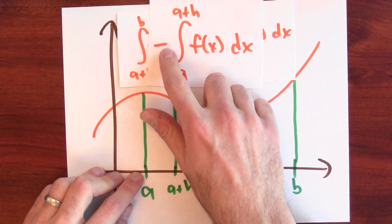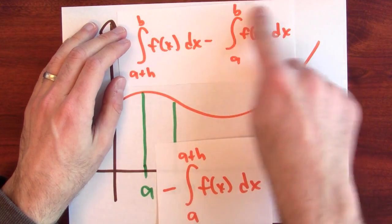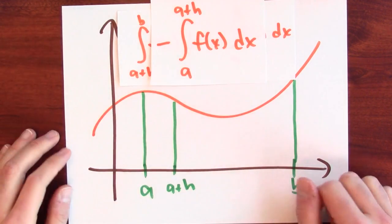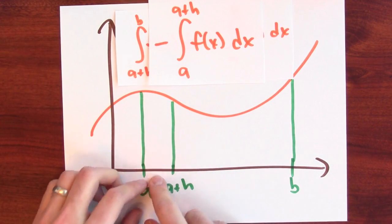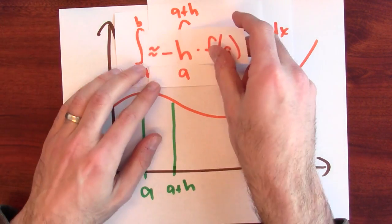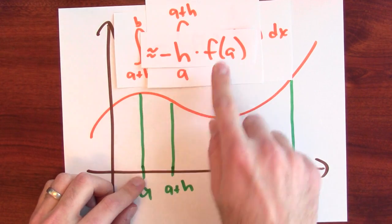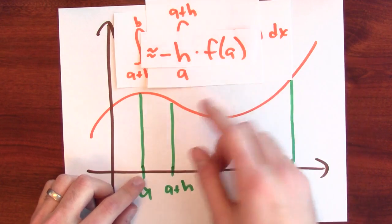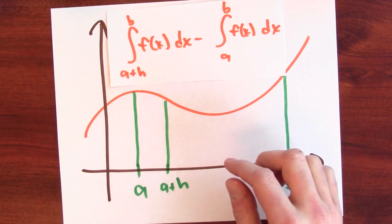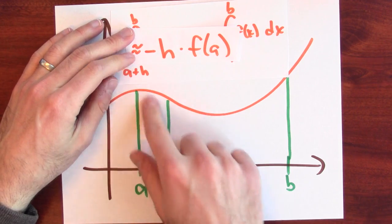But it comes with a negative sign, because I'm subtracting this smaller area and I'm subtracting this larger area. So I've got this negative sign here. Now, this region, if h is small enough, is practically a rectangle. And it's practically a rectangle of width h and height, let's say f of a. So that means that this difference is at least approximately just h times the function's value at a.